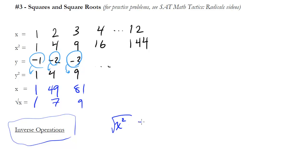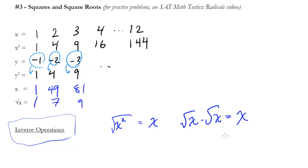So the square root of x squared is just equal to x. You can also see that the square root of x times the square root of x would also be equal to x — same kind of deal.